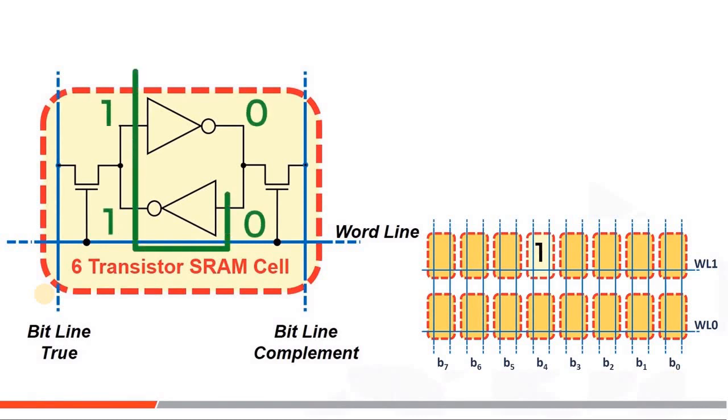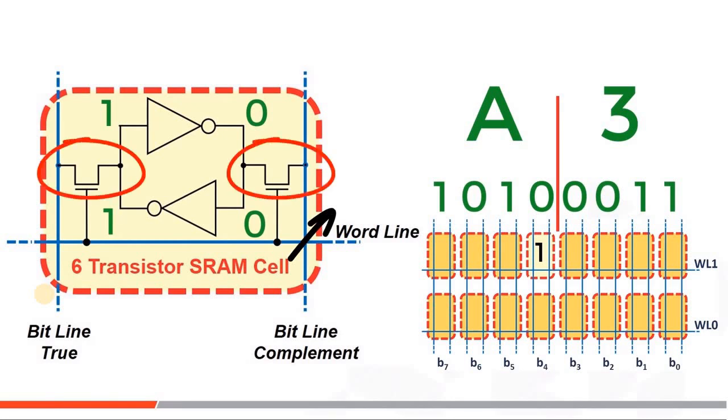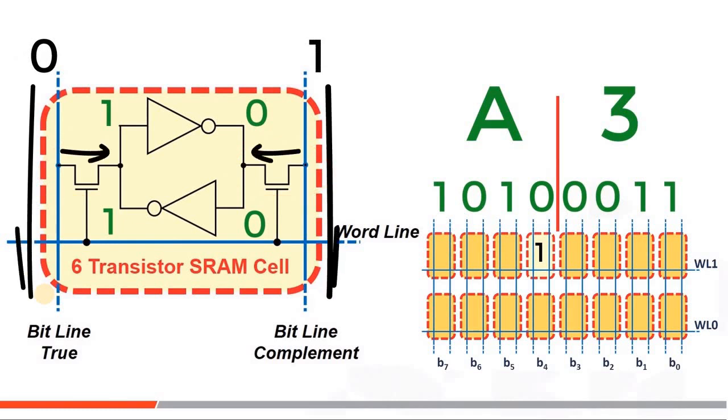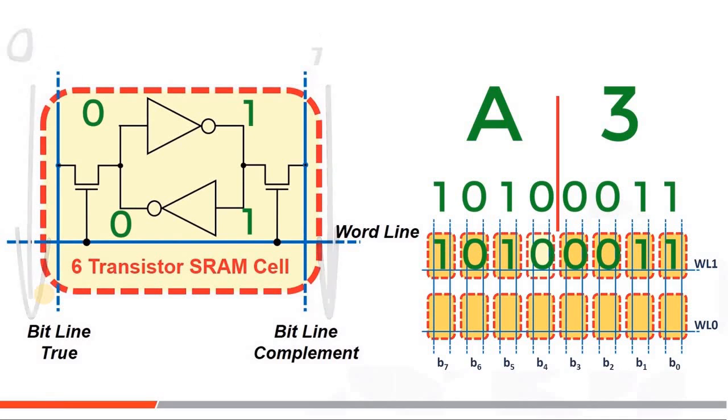Let's say you write A3 hex into this byte of memory. The address bytes you sent to the memory are decoded so that the word line turns on these two transistors simultaneously. Then these bit lines, true and complement, are driven with your A3 value. The drive strength is set so that the weaker inverters inside the memory cell change to keep your new value. The word line is then turned off and your A3 hex value is saved.